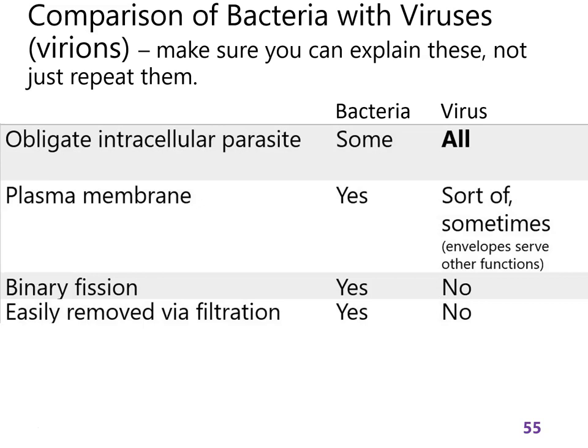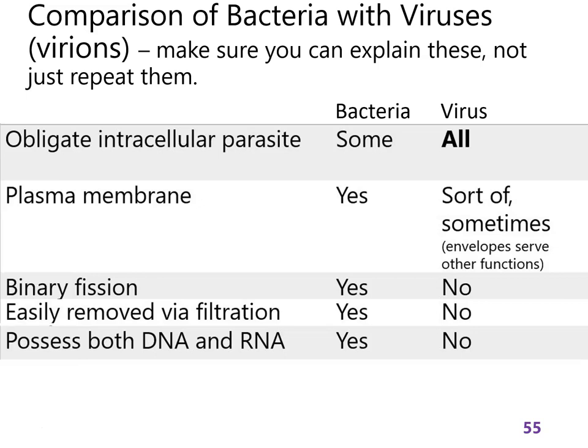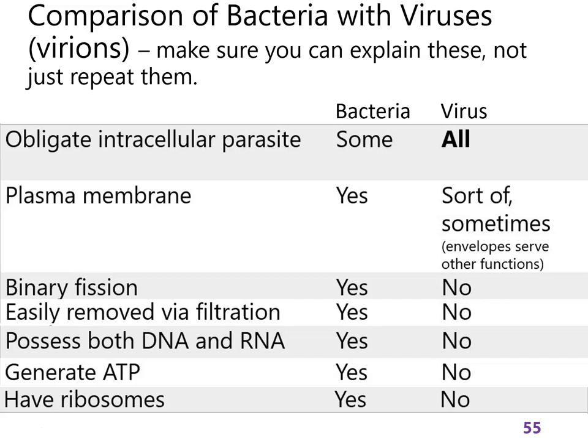Historically, early researchers realized you could filter water and remove bacteria, but many filters would let viruses pass through — another way of saying virions tend to be much smaller than any kind of cell. Also think through: why would we expect to find both DNA and RNA in a bacterial cell but not in a virion? Why do we think bacteria can generate ATP but viruses can't? Why would a virus even need to make ATP? And would a virus make its own proteins? The vast majority of viruses don't need to.